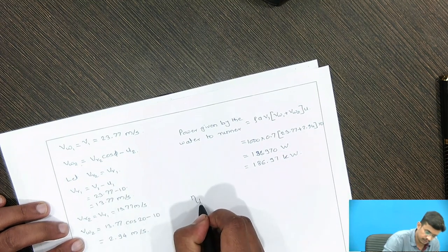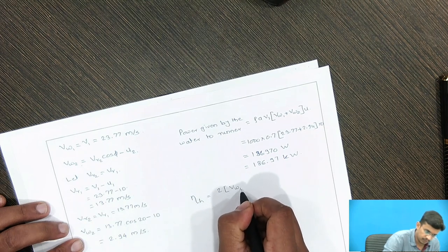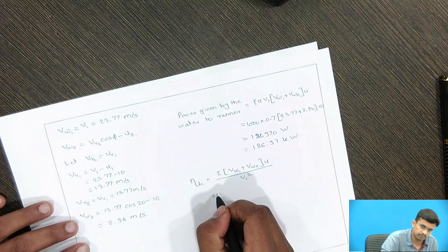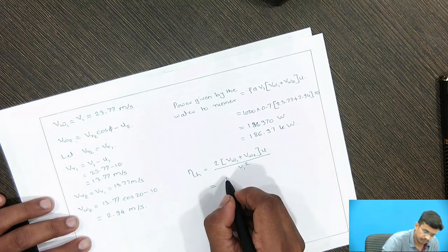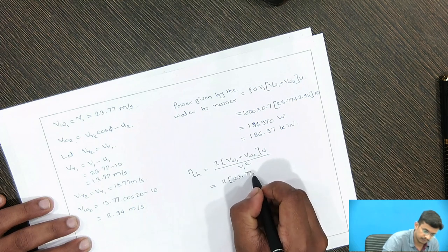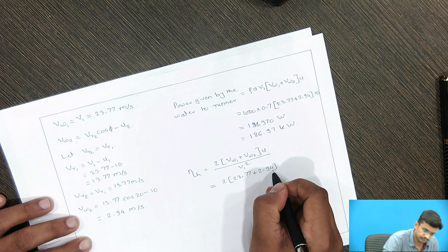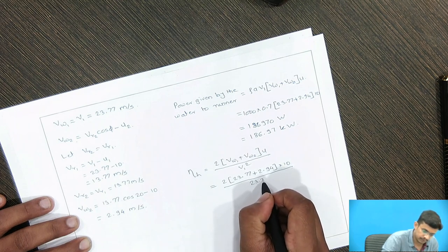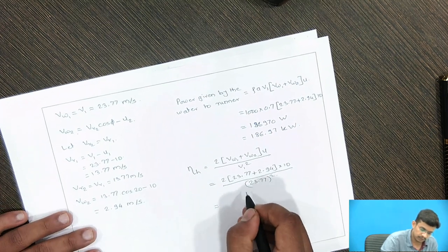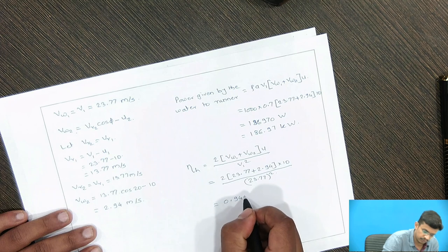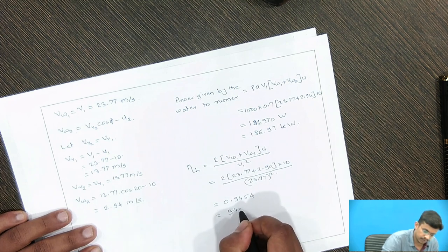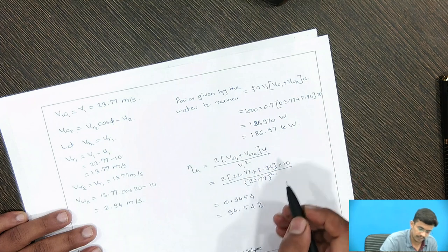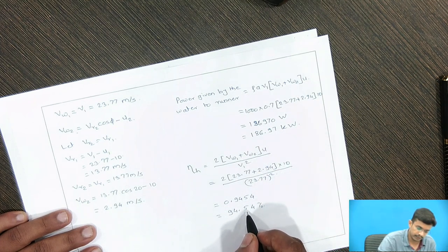For hydraulic efficiency, the formula is η = 2 × (Vw1 + Vw2) × U / V1². Substituting: η = 2 × (23.77 + 2.94) × 10 / (23.77²) = 0.9454, which equals 94.54%. So the power of the turbine is 186.97 kilowatts and the hydraulic efficiency of the turbine is 94.54 percent.